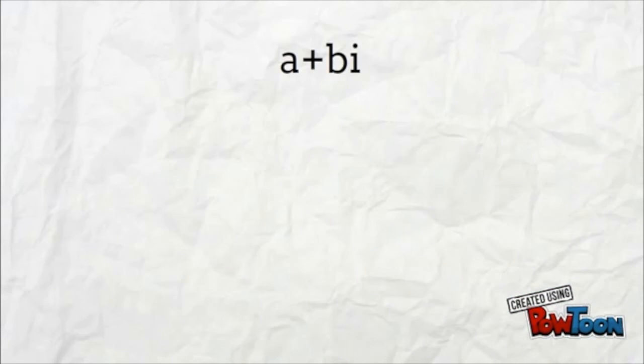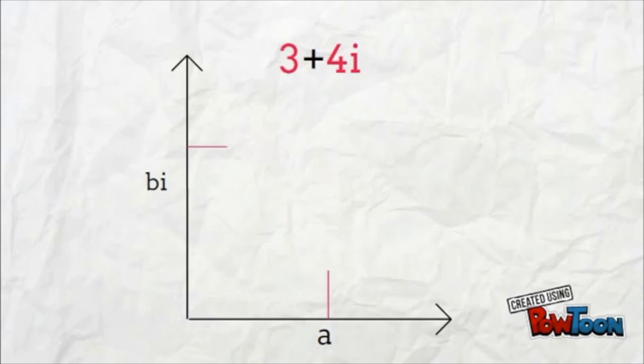For numbers of the form A plus or minus Bi, the x-axis represents A while the y-axis represents Bi. This made it a lot easier for people to accept their existence.